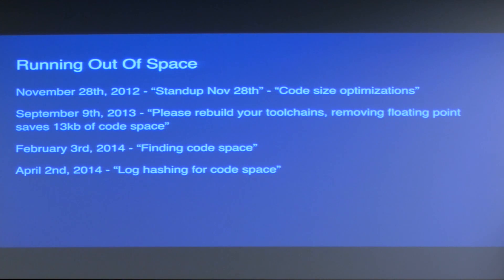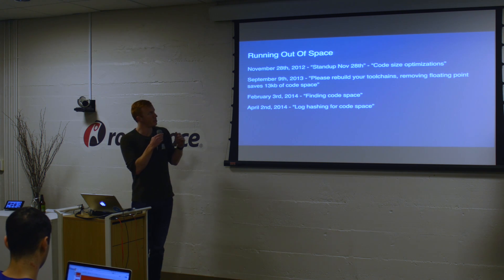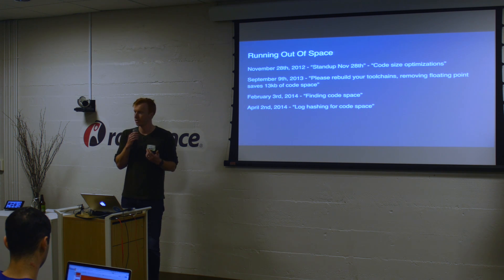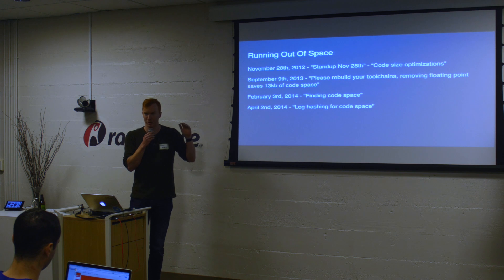Before we even shipped 1.0, before we even shipped product to end users, we were running up against that 512 kilobyte limit. It continued to be a constant challenge as we kept adding features and rewriting parts of the operating system. This is really a testament to our long-term fight with this issue — starting out in 2012, the feature set was much smaller. Only by continuing to optimize our code base and learning to be more effective with limited resources were we able to keep shipping firmware.